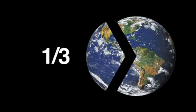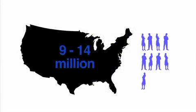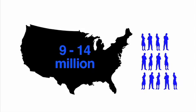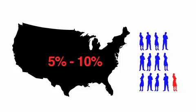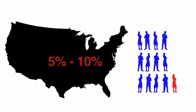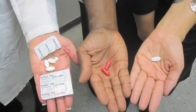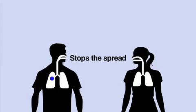About one-third of the world's population is infected with TB bacteria. In the United States, between 9 and 14 million people have latent TB infection, and without treatment, between 5 to 10 percent of people with TB infection will progress to TB disease at some point in their lifetime. Treating TB infection prevents infected people from developing TB disease and stops the spread to others.